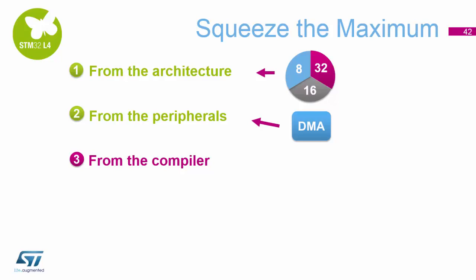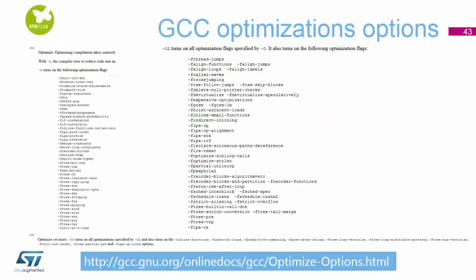So where else can we save more power consumption from? Let's have a look at the compiler now. There are various settings inside the GCC compiler for doing all the optimisation. We're currently running IAR.